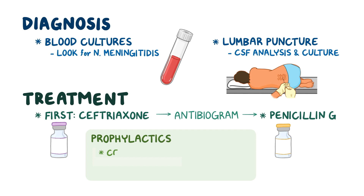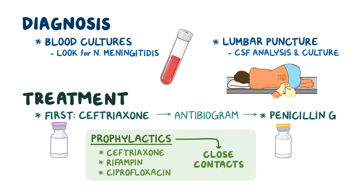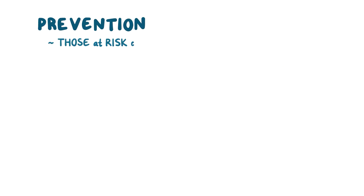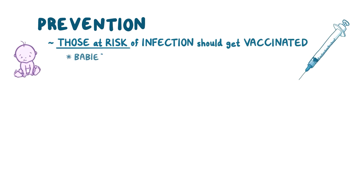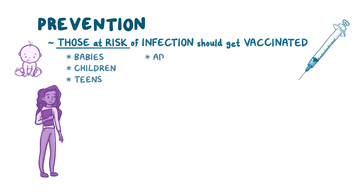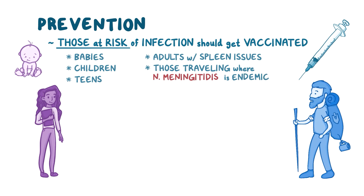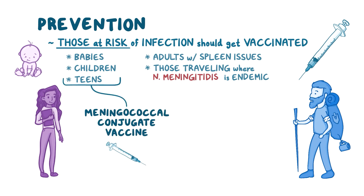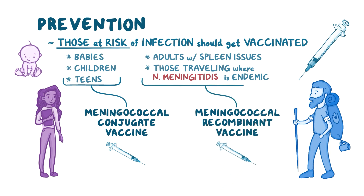Additionally, prophylactic ceftriaxone, rifampin, or ciprofloxacin should be given to close contacts of the affected individual. Finally, it is recommended that people who are at risk of a meningococcal infection get vaccinated. These include babies, children and teens, adults with spleen issues, or those who travel in places where N. meningitidis is endemic. Currently, there are two kinds of vaccines against N. meningitidis: the meningococcal conjugate vaccine, typically given to children and teens, and the meningococcal recombinant vaccine, typically given to adults.